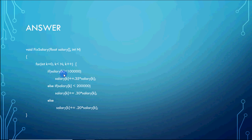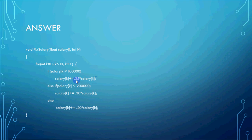Check: if salary[k] is less than 1 lakh, then 35% of salary[k] is added to the original salary. So 35% of the salary is added to salary[k] if the salary is less than 1 lakh.